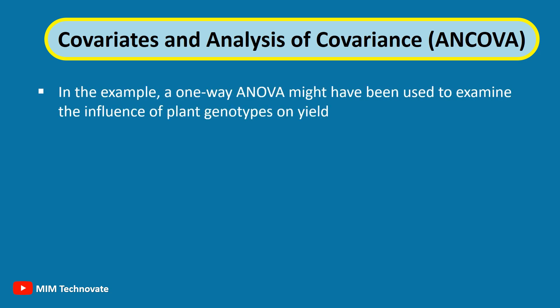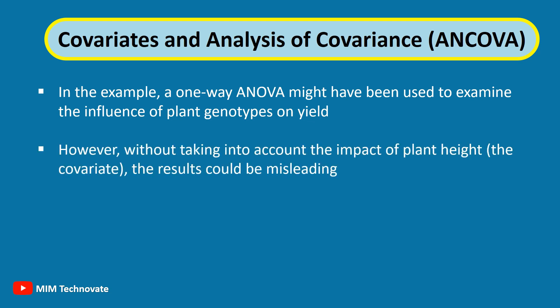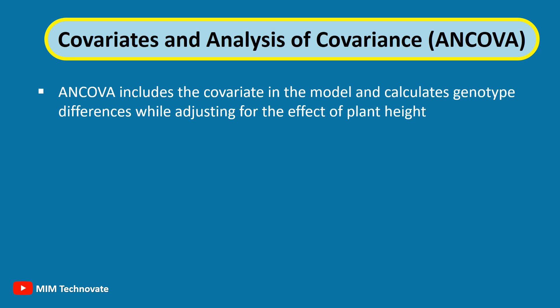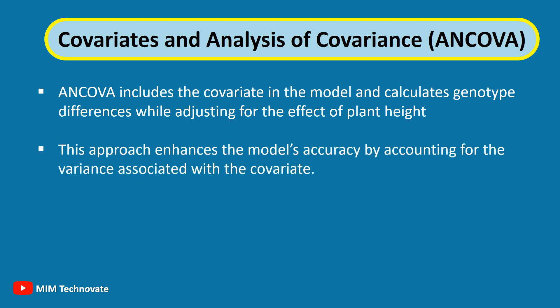In the example, a one-way ANOVA might have been used to examine the influence of plant genotypes on yield. However, without taking into account the impact of plant height — the covariate — the results could be misleading. ANCOVA includes the covariate in the model and calculates genotype differences while adjusting for the effect of plant height.